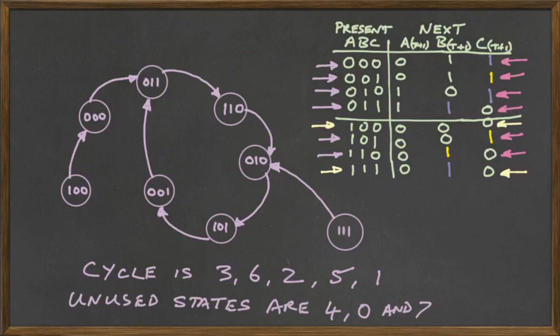Those are called unused states because they're not part of the cycle. So, this one has unused states of 4, 0, and 7. If they're not in the cycle, then they have to be unused states.